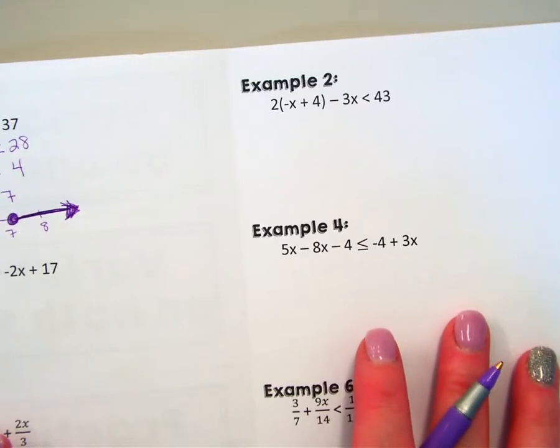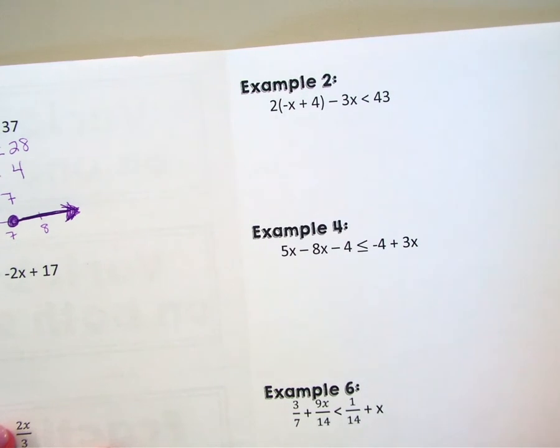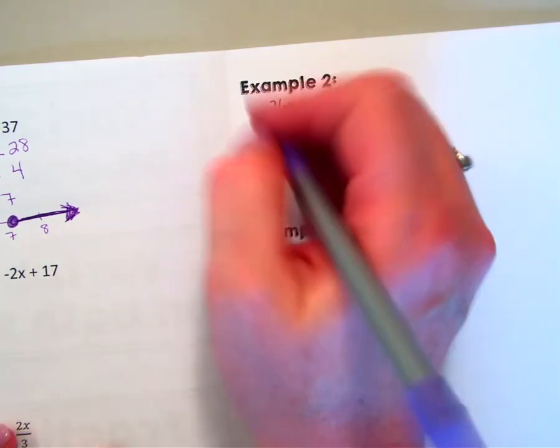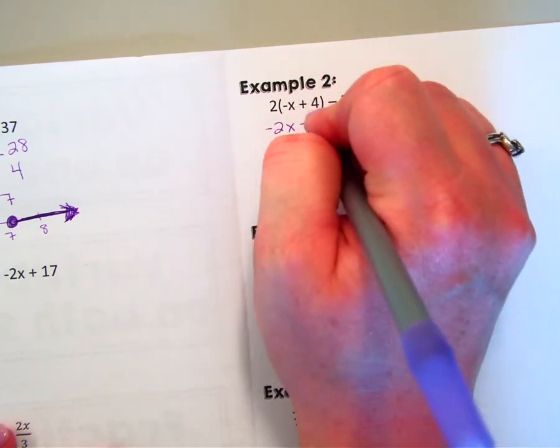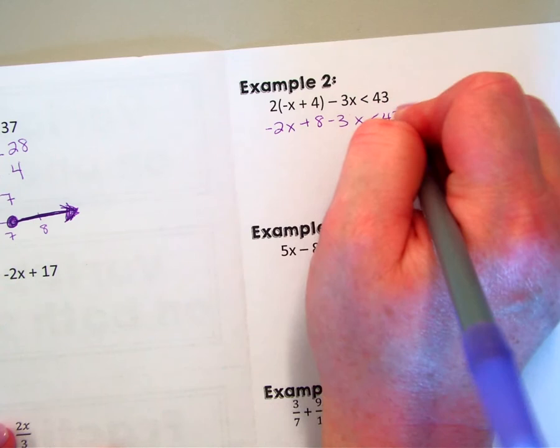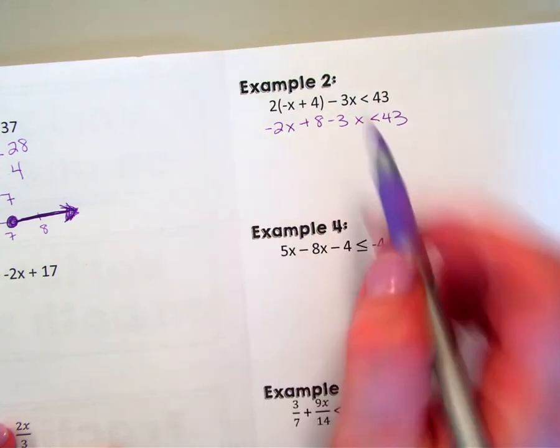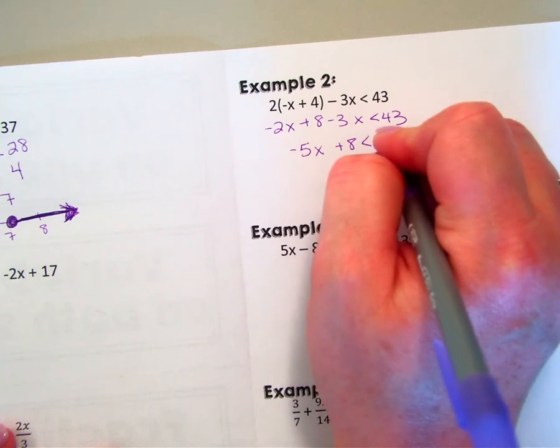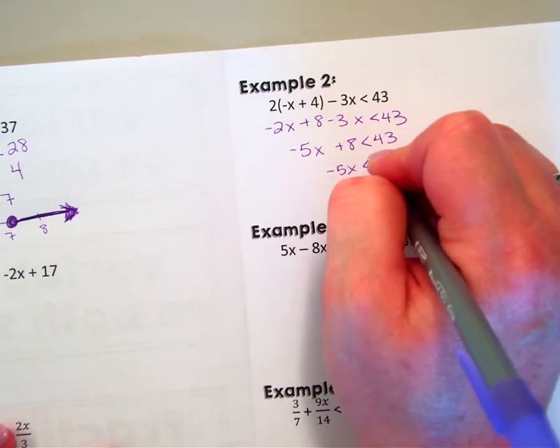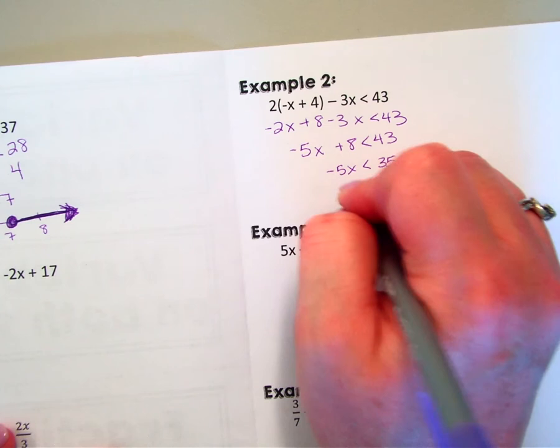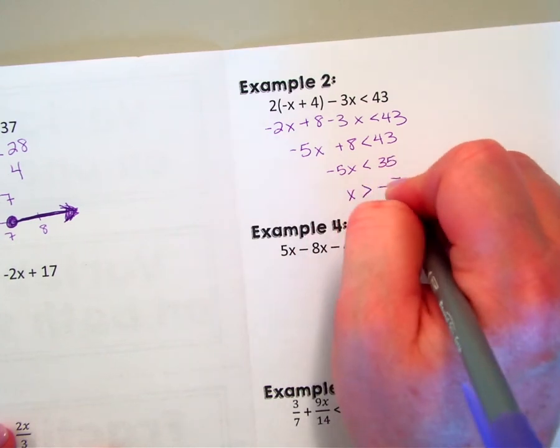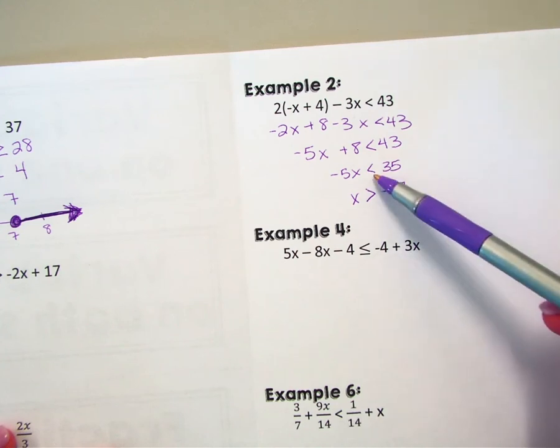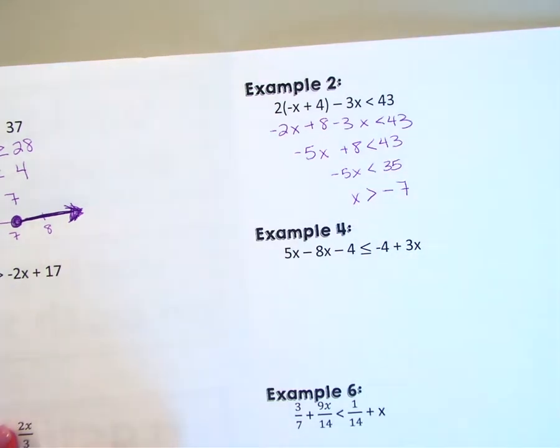I'll try my example number two. This time I do want to do distributive property because I have two variables on the one side. I'm going to have to combine. I will do distributive here so I can combine my negative 2x, my negative 3x, subtract my 8, divide by negative 5. And this is the difference: when we divide or multiply by a negative, this sign flips.